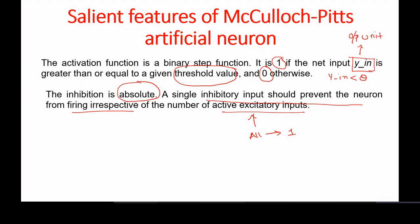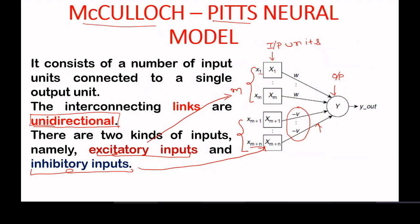To summarize the structure: the McCulloch-Pitts neural model has M excitatory inputs with positive weights and N inhibitory inputs with negative weights. All positive weights share the same value W and all negative weights share the same value minus V. The interconnecting links are unidirectional.